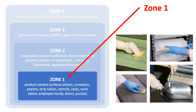Zone 1 surfaces do come into direct contact with the product. These include items such as conveyor belts, scoops or other utensils, gloves, slicers, and peelers.